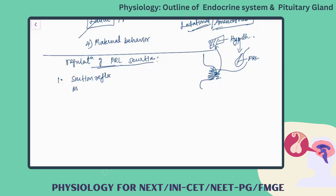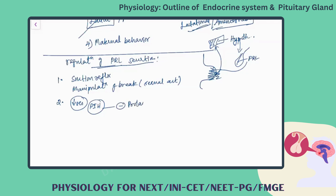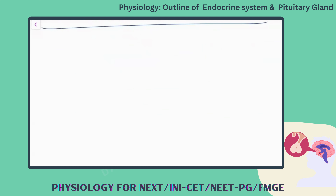There is also a factor that decreases prolactin secretion: the prolactin inhibitory hormone from the hypothalamus. Similarly, there is a prolactin releasing hormone (PRH) from the hypothalamus that promotes prolactin production. Both a releasing hormone and an inhibitory hormone from the hypothalamus are involved in regulating prolactin secretion.